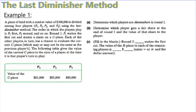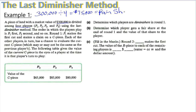Example one: a piece of land with a market value of $300,000 is divided by four players. From that first sentence we can determine what constitutes a fair share. $300,000 divided by four players gives us $75,000 per player — that is our fair share. Since $75,000 is a fair share, the C piece, when cut by player one, is worth $75,000 to player one.